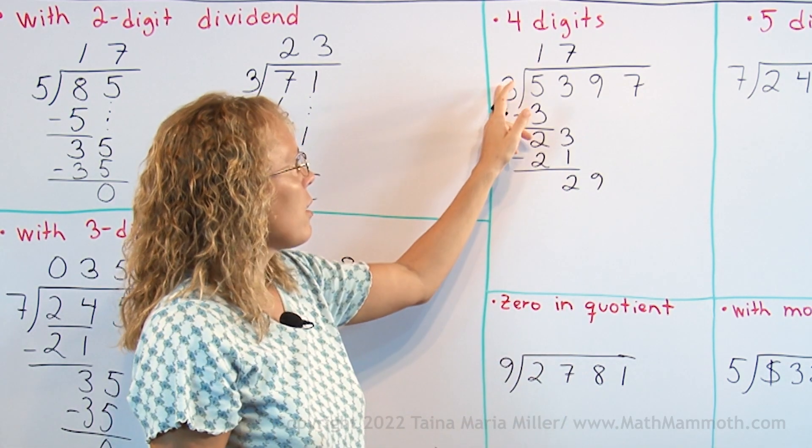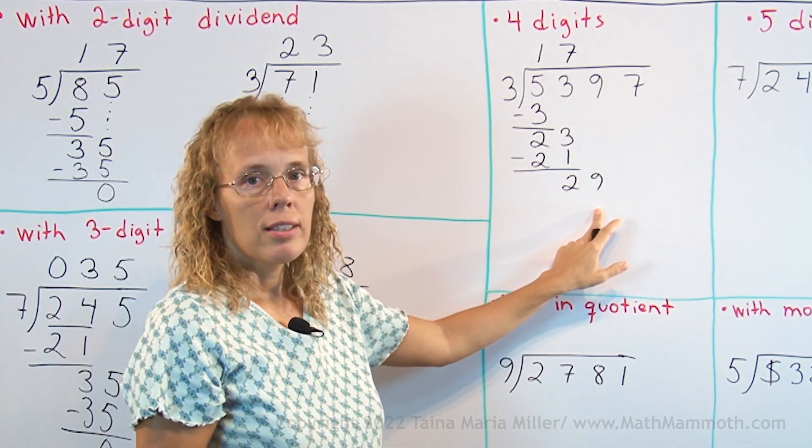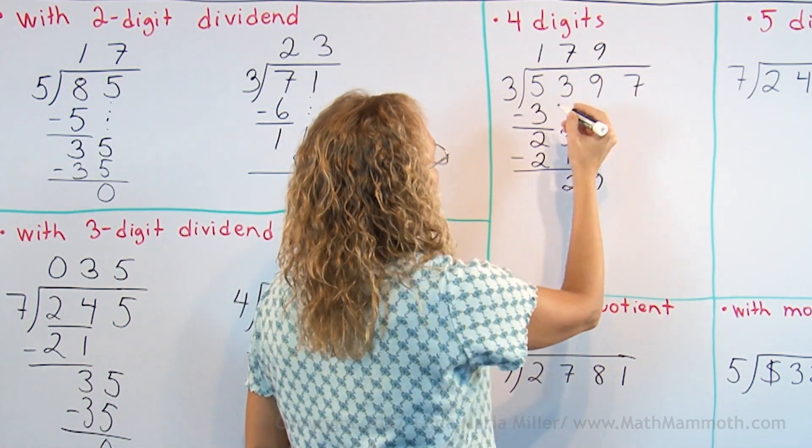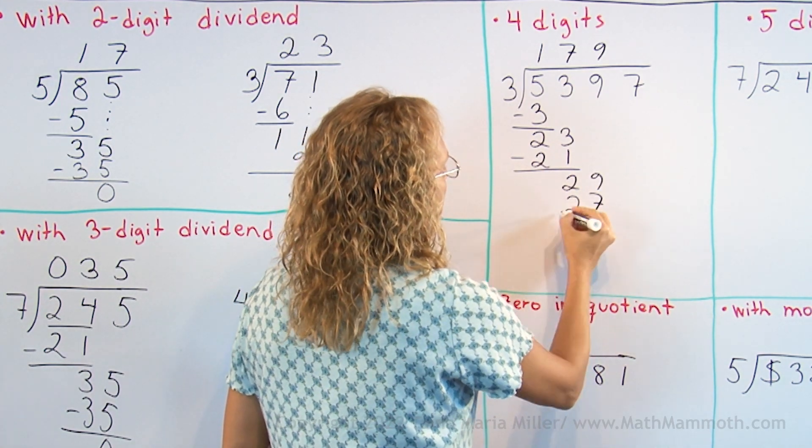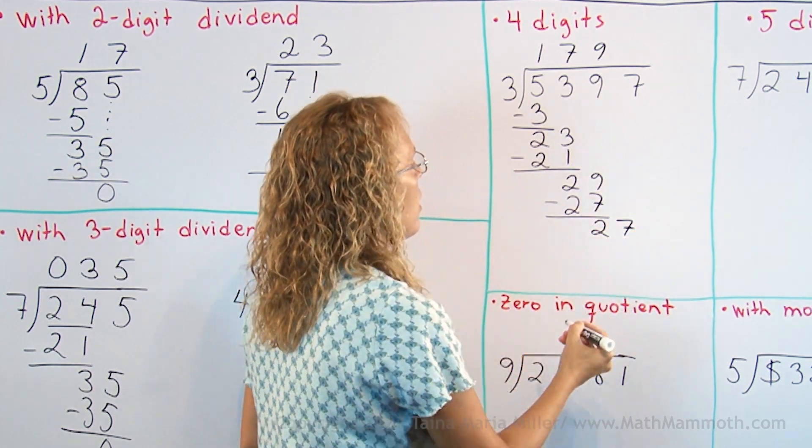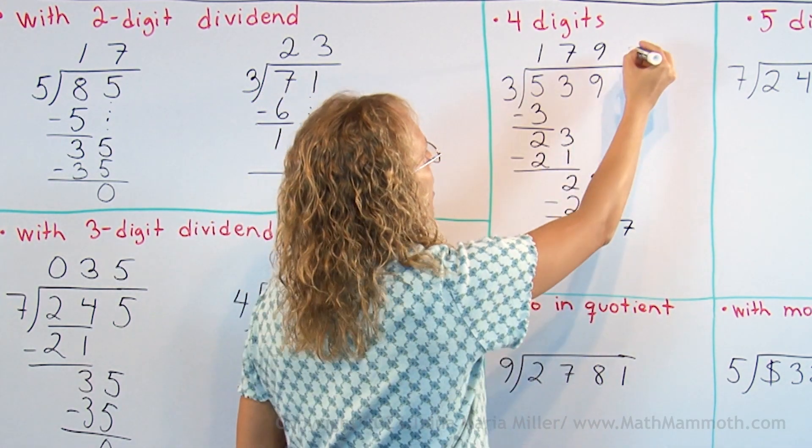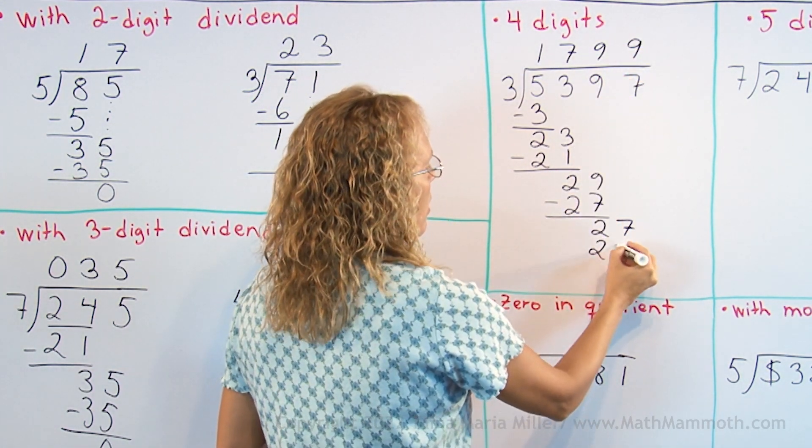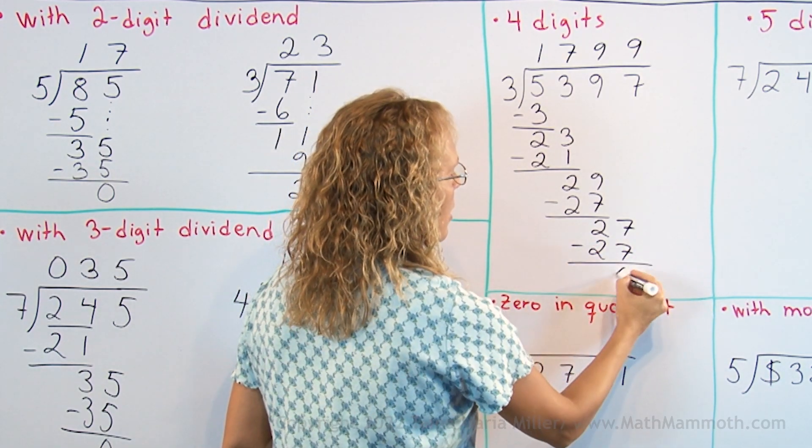Add to it the 9 tens, then 3 goes to 29, 9 times. 9 times 3, 27, and subtract. Get 2 as a remainder and drop down this last digit, and to 27 it goes evenly, 9 times. 9 times 3, 27, and subtract to get 0.